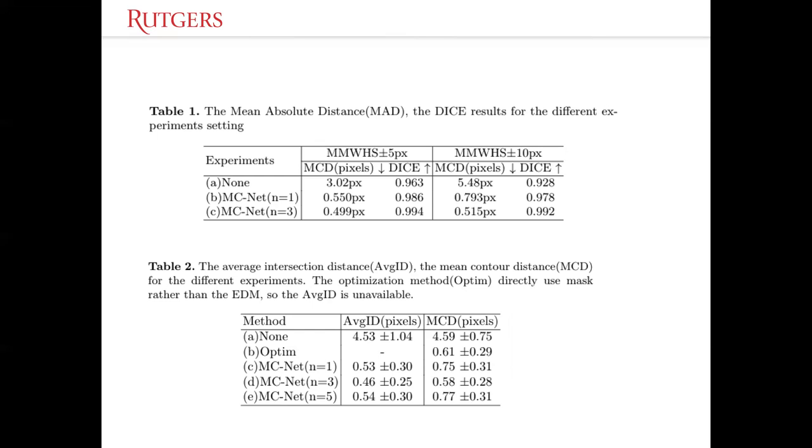The second table shows the average intersection distance and the mean control distance for the different experiments. The optimization method directly uses mask rather than the Euclidean distance map, so the average ID is not available to calculate. But we can see that with three iterations, MC-Net can get comparable results with the optimization performance.